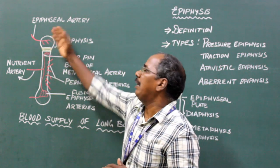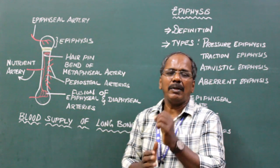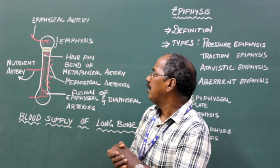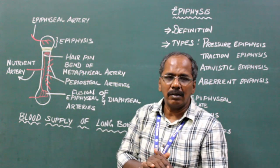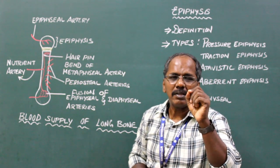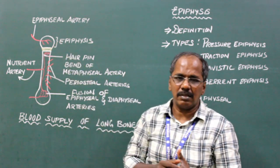Epiphysial artery is derived from periarticular vascular arcades and enters the ends of the bone or epiphyses through numerous vascular foramina and supplies the epiphyses.